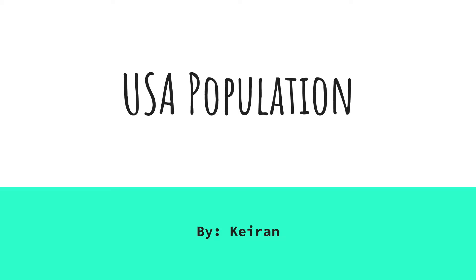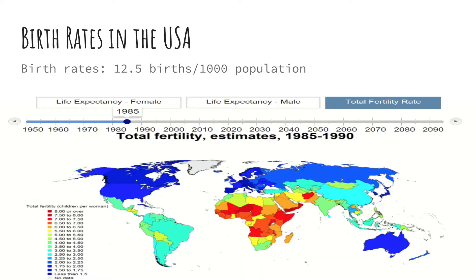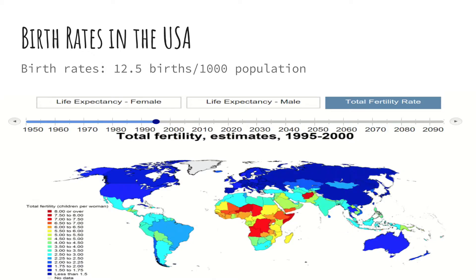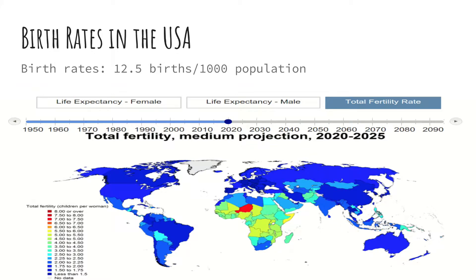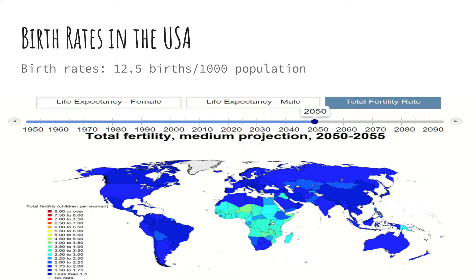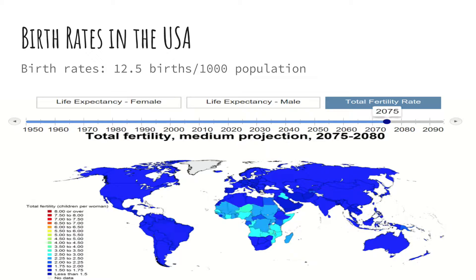Before I start, all statistics belong to the CIA World Factbook. The USA, or the United States of America, situated in the northern and western hemisphere of the world and is in the Americas continent, has a population of 326 million people, which was last updated July 2017, according to the World Factbook. The USA has a birth rate of 12.5 births per 1,000 people.